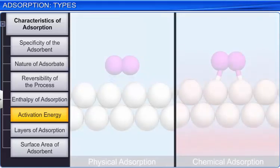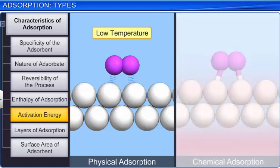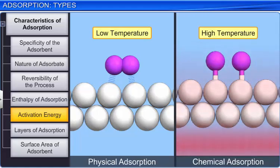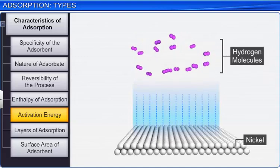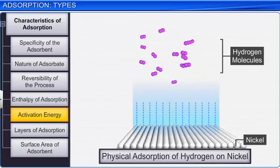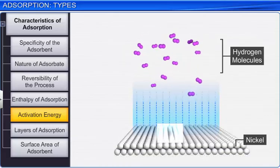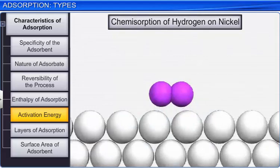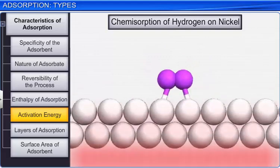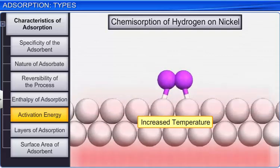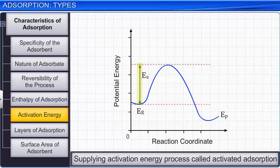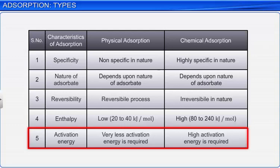A gas may be physically adsorbed at low temperature but chemisorbed at high temperature. During the adsorption of hydrogen on nickel at low temperatures, hydrogen is physically adsorbed on nickel; however, at high temperatures, hydrogen gets chemisorbed on the surface of nickel. An increase in temperature supplies the necessary activation energy for the formation of surface compounds, and the process is called activated adsorption. Physical adsorption requires no appreciable activation energy while chemical adsorption requires high activation energy.